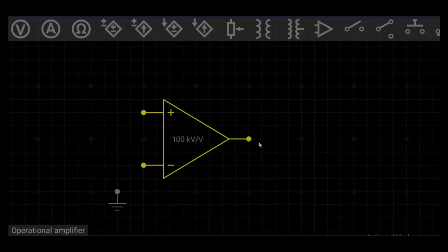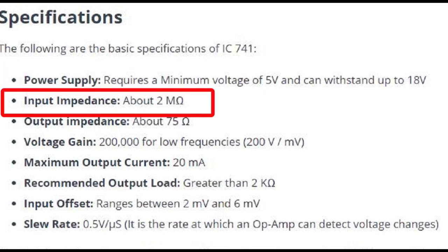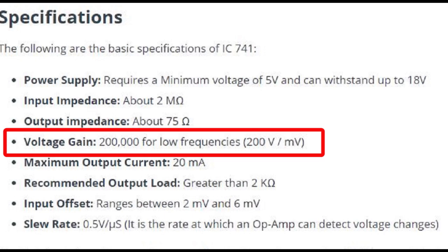Let us now discuss the characteristics of op-amp. Power supply voltage for op-amp varies from plus 5 volts to 18 volts. Input impedance is around 2 mega ohms, but for an ideal op-amp it should be infinite. Output impedance is around 75 ohms, and for an ideal op-amp it should be 0 ohms.